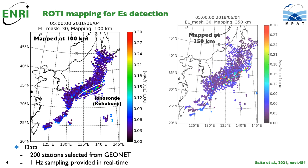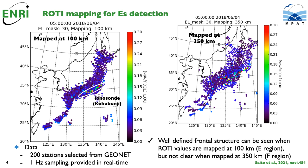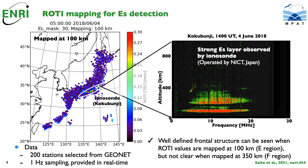while it is not clear when mapped at 350 km. This indicates the structure is likely to exist around 100 km altitude, and it is validated by ionosonde observation.